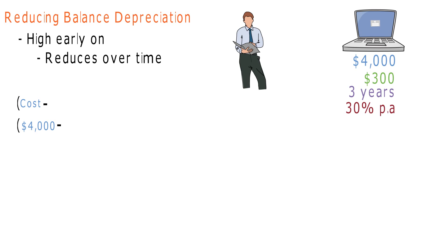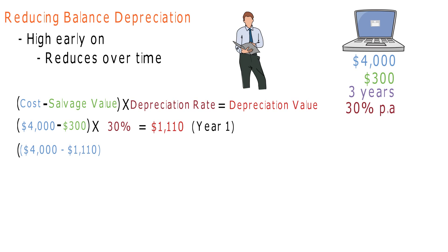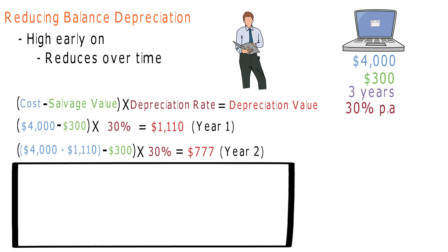In a reducing balance depreciation situation, the cost minus the salvage value, multiplied by the depreciation rate, will give us the depreciation value of $1,110. For the next year, we will subtract our depreciation value from our cost and use this new value in our previous equation of cost minus salvage times depreciation rate, to get that year's depreciation value of $777. This will continue until the asset's life cycle ends.